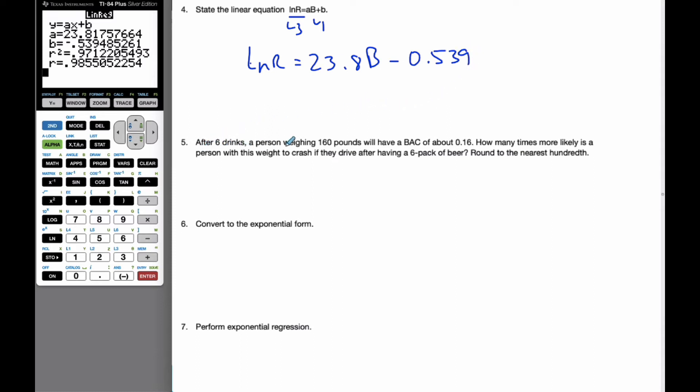After 6 drinks, a person who weighs 160 pounds will have a blood alcohol level of 0.16. How many times more likely is the person with this weight to crash if they drive after having a six-pack of beer? Well, that's six drinks, rounding to the nearest hundred. Well, in order to do it, I'm going to use, I know it's in Y1. And one of the tricks I can do is I can go Y1, and I plug in 0.16. And so now I know that ln(R) is equal to 3.2713.